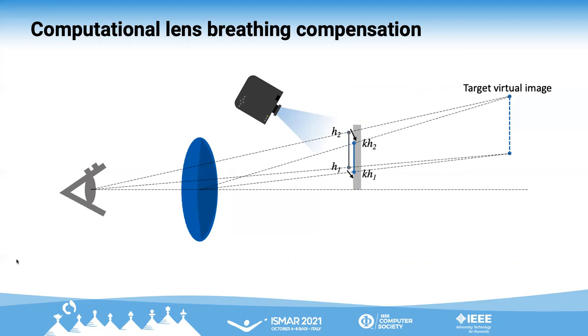Now we consider this target virtual image from the ETL's point of view, then the projection image is transformed. Actually, we found that this transformation can be formulated as a simple scaling with regards to the optical axis. So we compute the scaling factor from this model and scale the projection image to compensate for the lens breathing artifact.